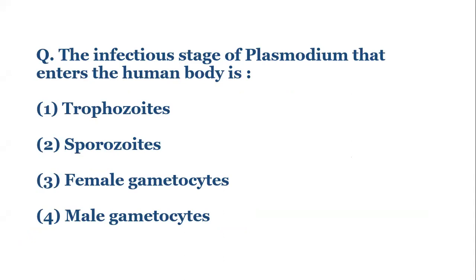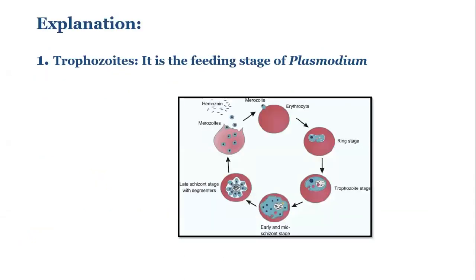So let's take up the options one by one. Plasmodium is a parasitic protozoan which causes malaria. The carrier of plasmodium is the female Anopheles mosquito and it requires a human host to complete its life cycle. There are three stages in the life cycle of plasmodium: the gametocyte stage, the sporozoid stage, and the mirozoid stage.